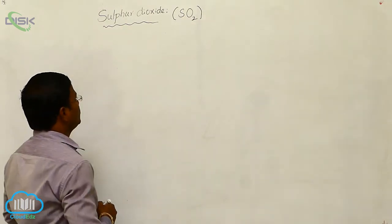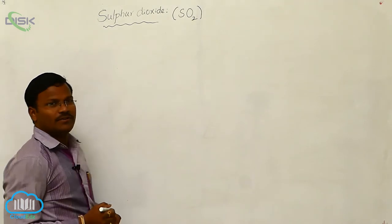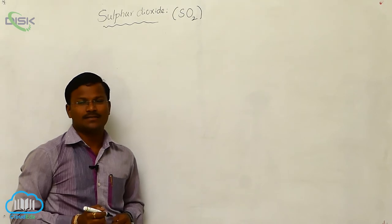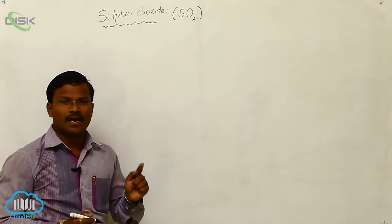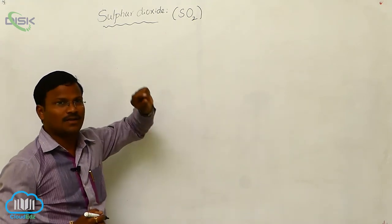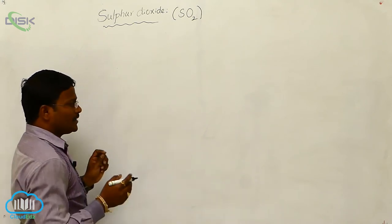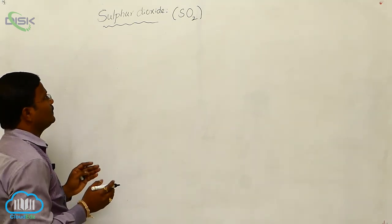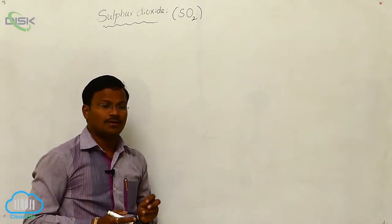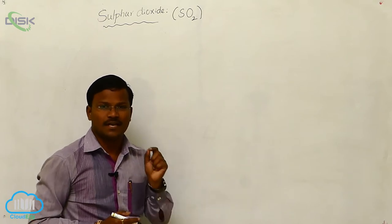Sulfur dioxide. Sulfur, by reacting with oxygen, results in the formation of two important oxides: sulfur dioxide with molecular formula SO₂, and sulfur trioxide with molecular formula SO₃. In our syllabus, the discussion is related to sulfur dioxide — its preparation, physical properties, chemical properties, and uses.